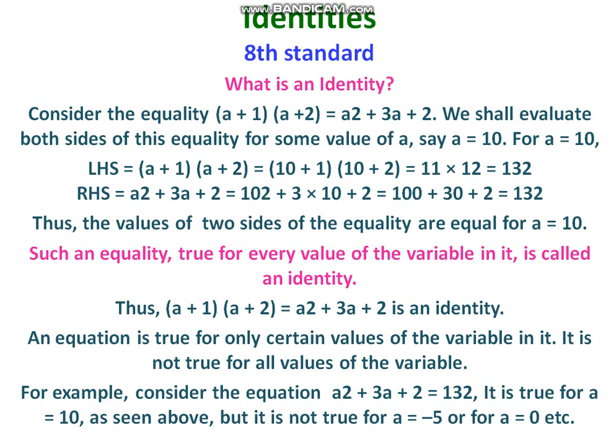The values of both sides of the equality are equal for a equals 10. Such an equality that is true for every value of the variable is called an identity. An identity means it is an equality in which both the LHS and RHS should be equal for any value we substitute for the variable.